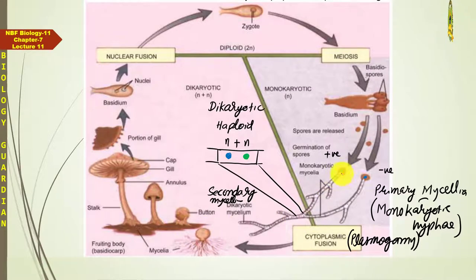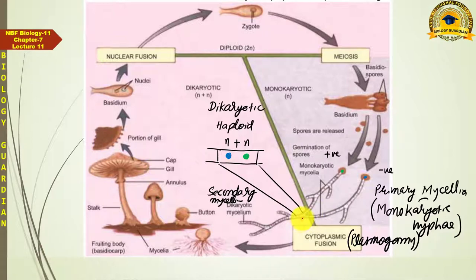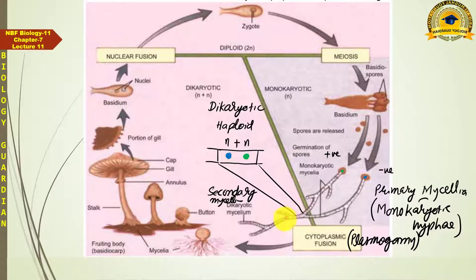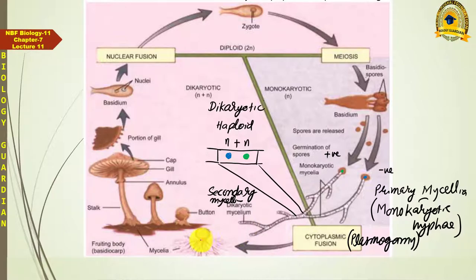Remember that germination of basidiospores happened in the soil, and both primary mycelia grew within the soil. Plasmogamy took place underground, and further division continued under the soil. The diakaryotic hyphae network keeps expanding underground, increasing the number of hyphae, until these diakaryotic hyphae start projecting upward from the ground.